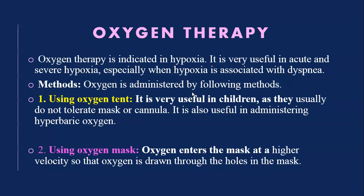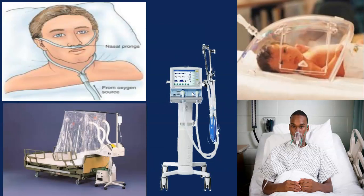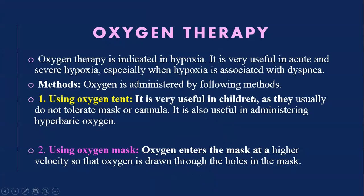There are different ways of administering oxygen therapy. The first method is by using an oxygen tent, which is very useful in children as they usually do not tolerate mask or cannula. It is also useful in administering hyperbaric oxygen.